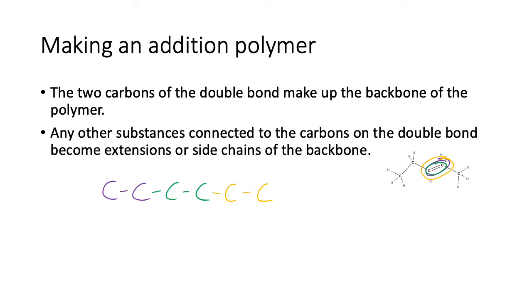Any other substances connected to the carbons on the double bond become extensions or side chains of the backbone. In this purple one here, those two carbons are there and there. We'll call this one A, we'll call this one B. Attached to A there is a hydrogen, so here's a hydrogen, and also attached to A is an ethyl group. So we'll draw an ethyl group here, CH2 CH3.